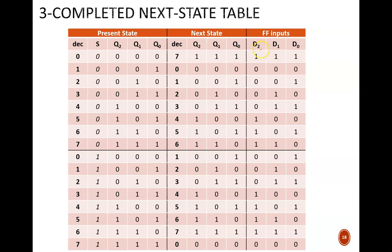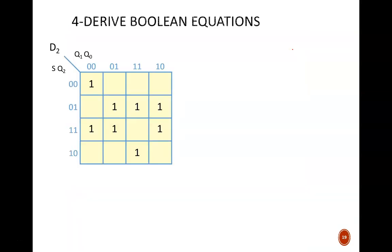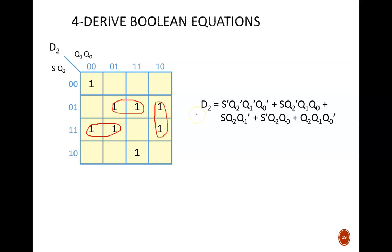There are only three equations that we need to derive: D2, D1, and D0. But D2 is a doozy. Here we see its K-map. The ones do not group together very nicely. We obtain three groups of two and two groups of one, which makes this lengthy equation. Good news though: D1 and D0 work out more nicely, and D1 has a unique way of simplifying. Pause the video and derive these equations on the follow-along.